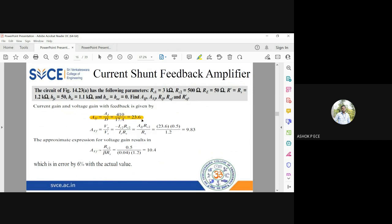Effectively, the current gain is 23.6 with feedback. When you apply negative feedback, the gain will reduce, so that is evident in the expression for aif. We already have a simplified expression for avf, so avf equals aaf times rc2 by rs: 2.5 by 1.2, you get 9.83.